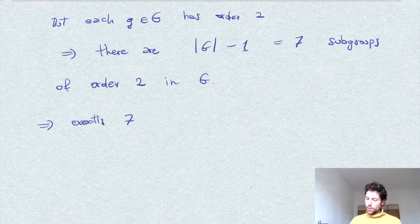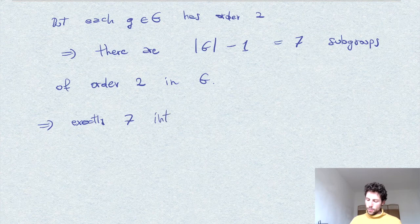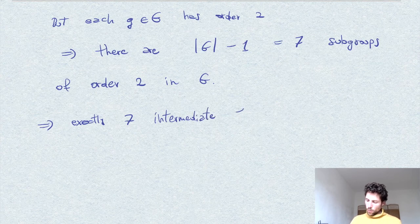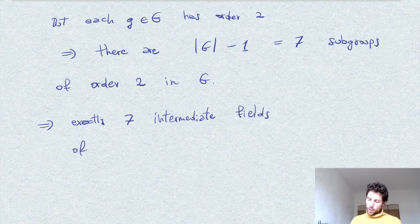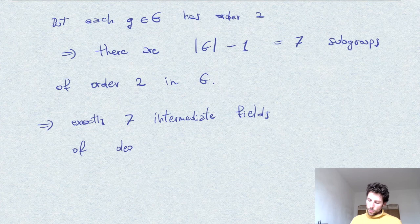And so, again applying the fundamental theorem, we conclude that there are exactly seven intermediate fields of degree 4 over Q.